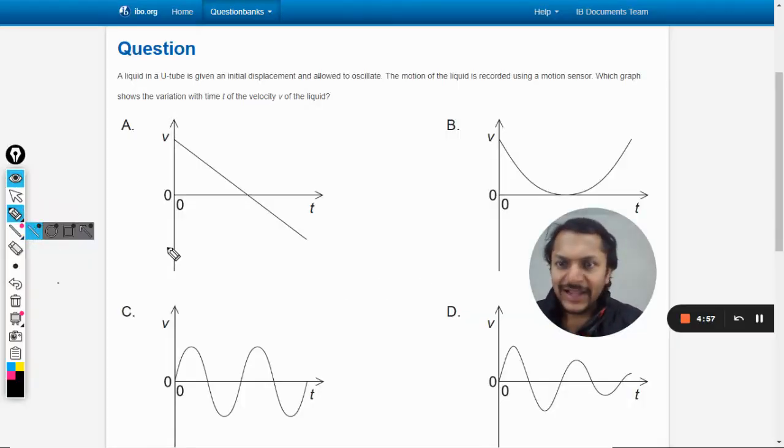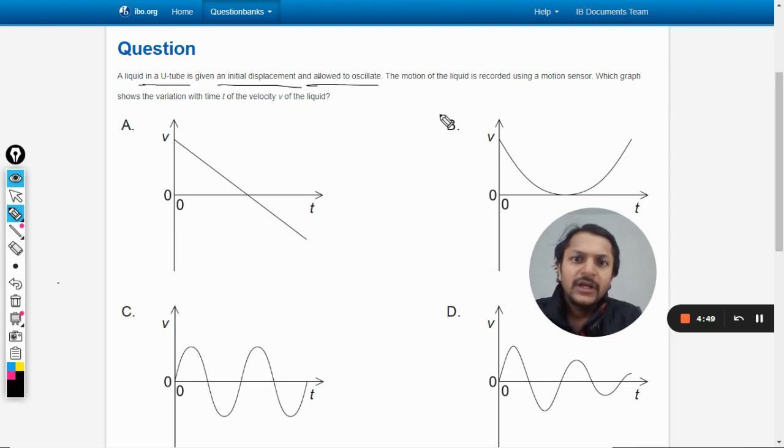Okay, dear students, let us see what is there in this question. A liquid in a U-tube is given an initial displacement and allowed to oscillate. The motion of the liquid is recorded using a motion sensor. Which graph shows...